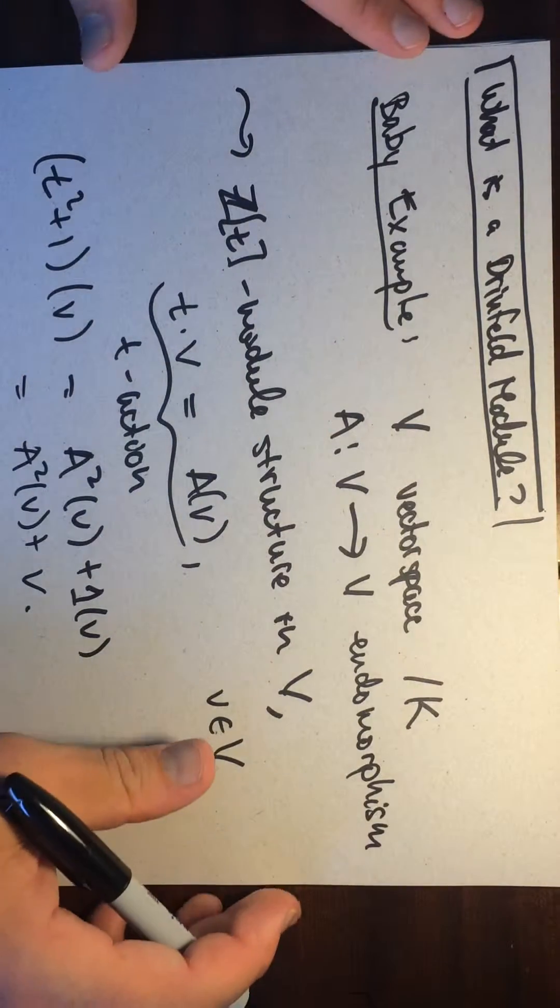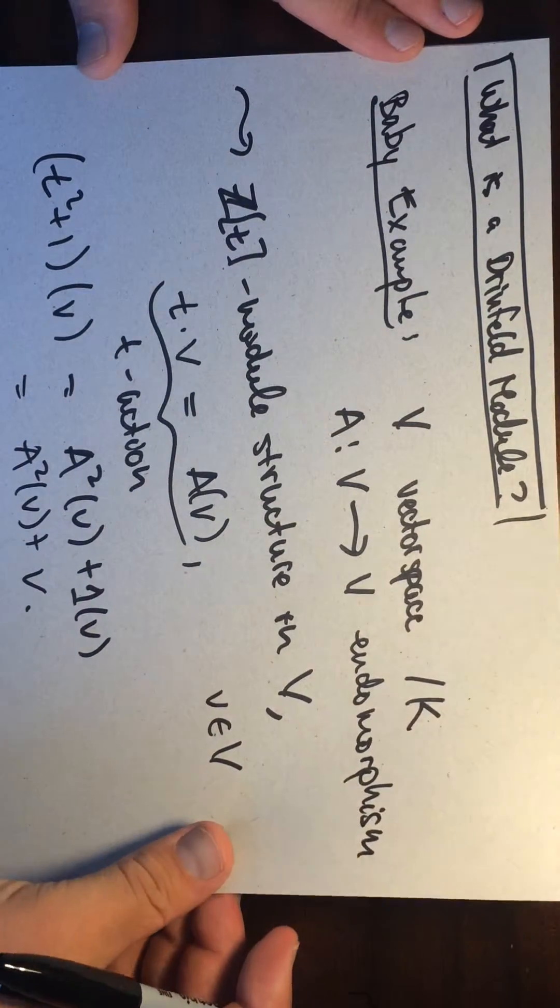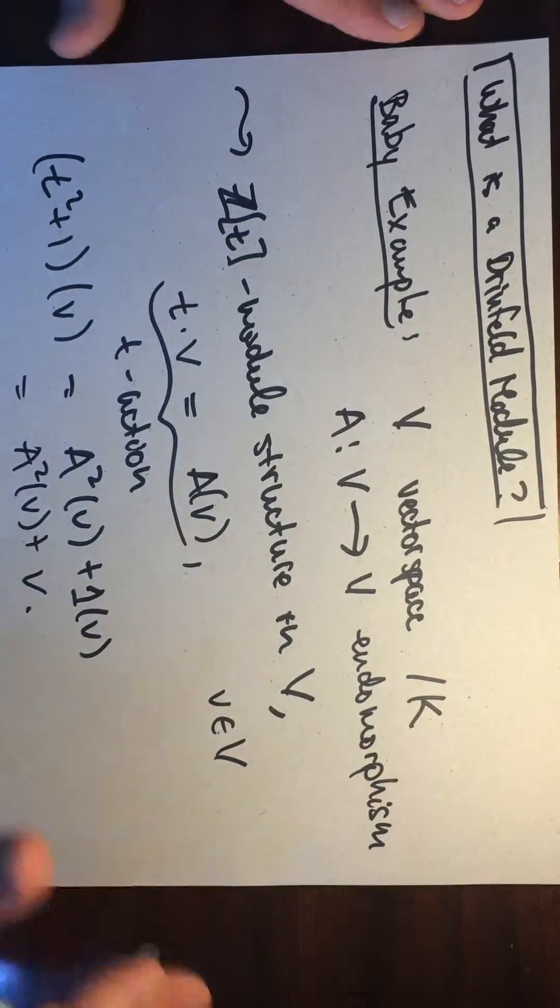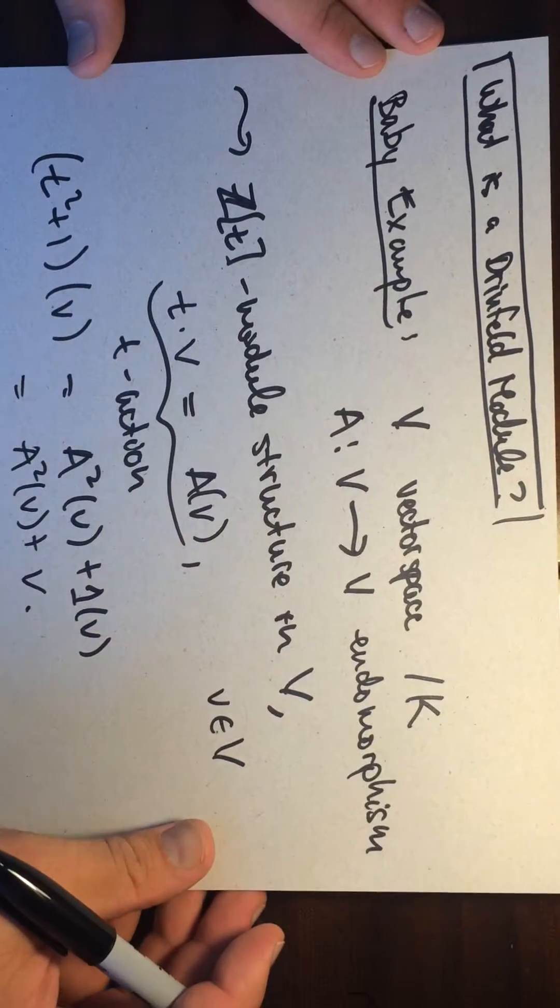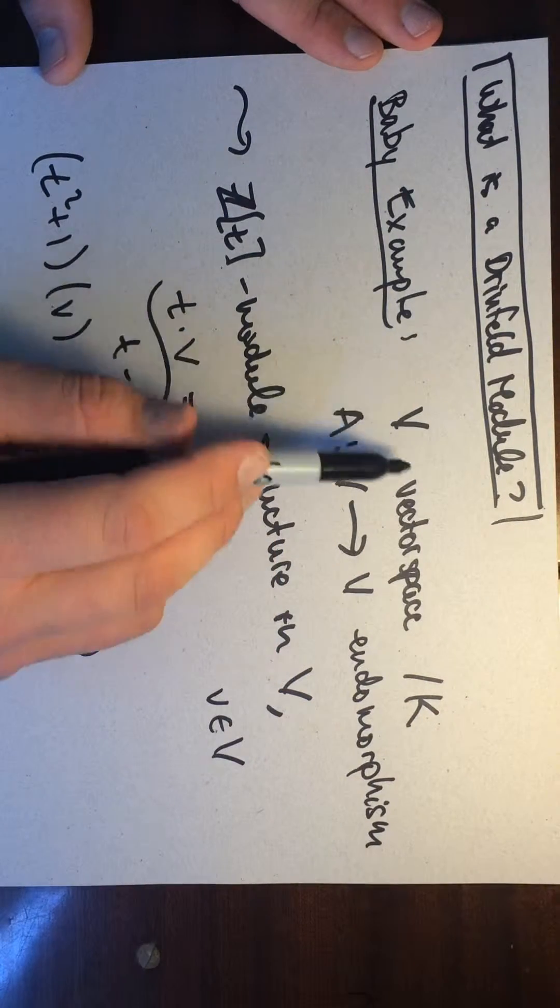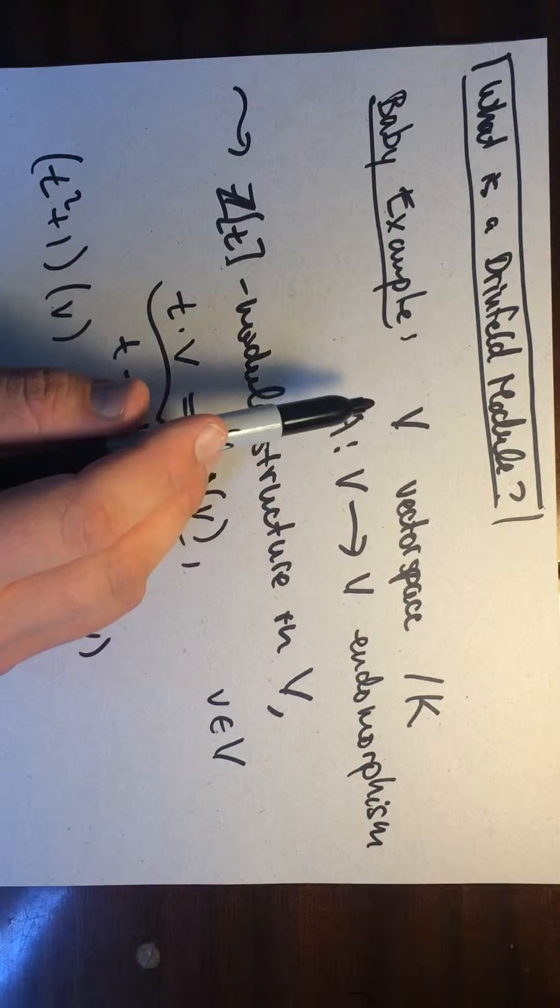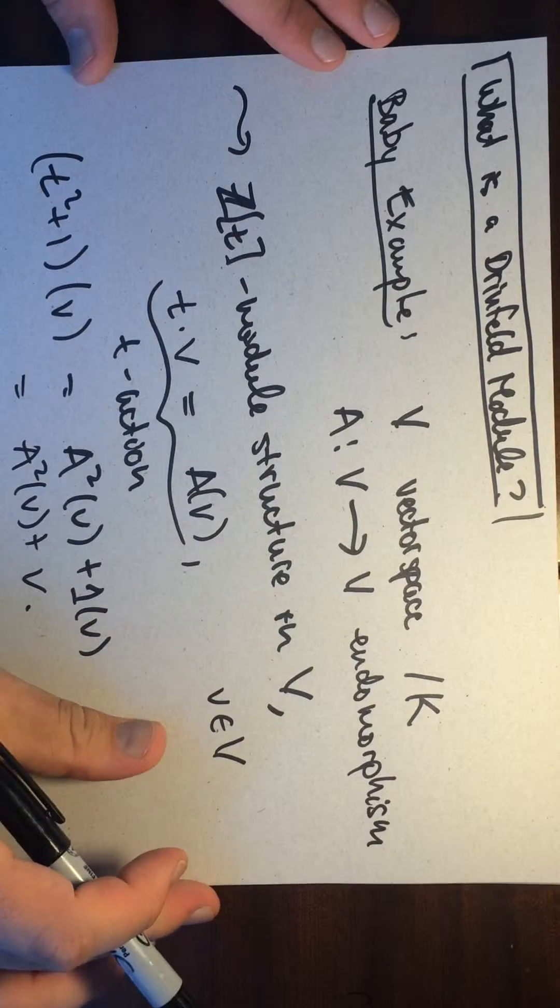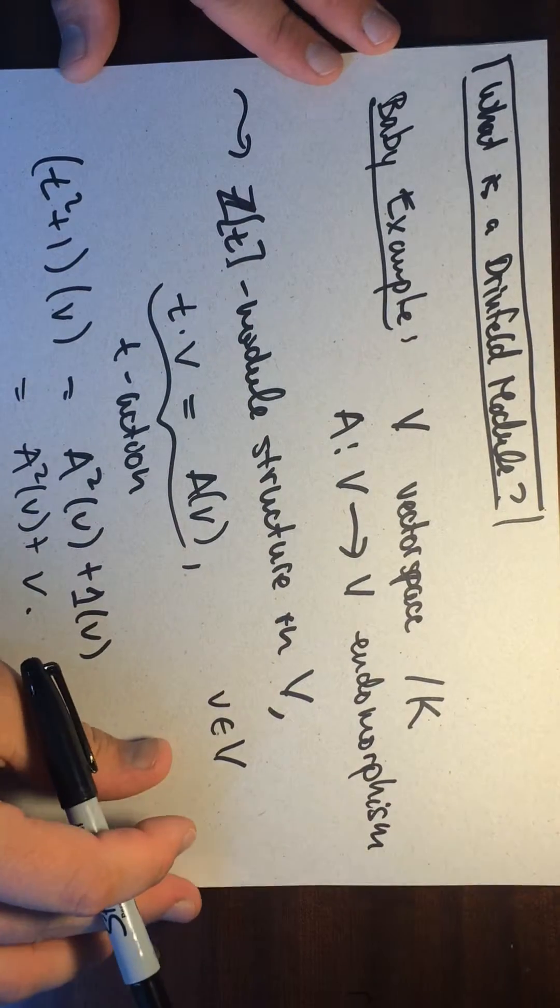And so this kind of appears when we study Jordan decompositions and things like this. So yeah, so this is the baby structure of a Drinfeld module. What we're going to do is we're going to replace this vector space with essentially a certain field. And then we're going to replace A with an additive polynomial. Let me explain again. Let's recall what the additive polynomials are.